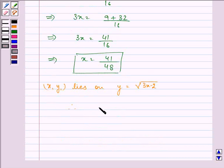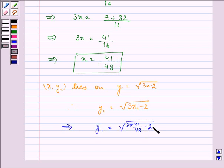We can say that therefore, y1 will be equal to under root 3x minus 2. That implies y1 is equal to, we have x1, the value of x1 as 41 upon 48. And I am substituting its value.